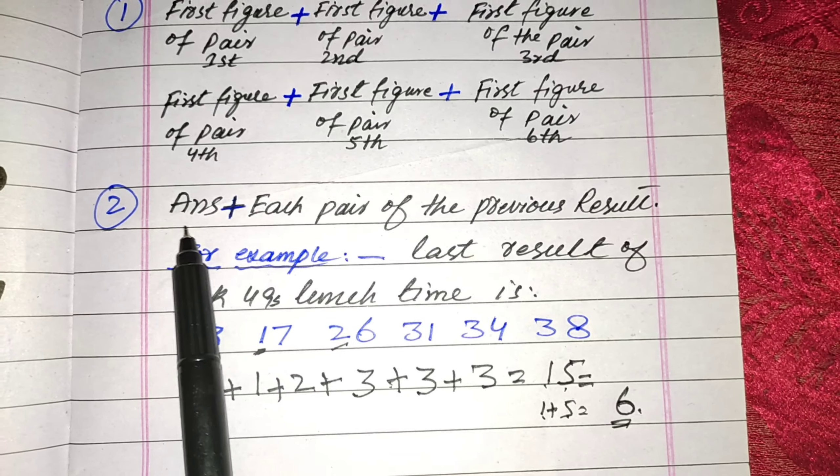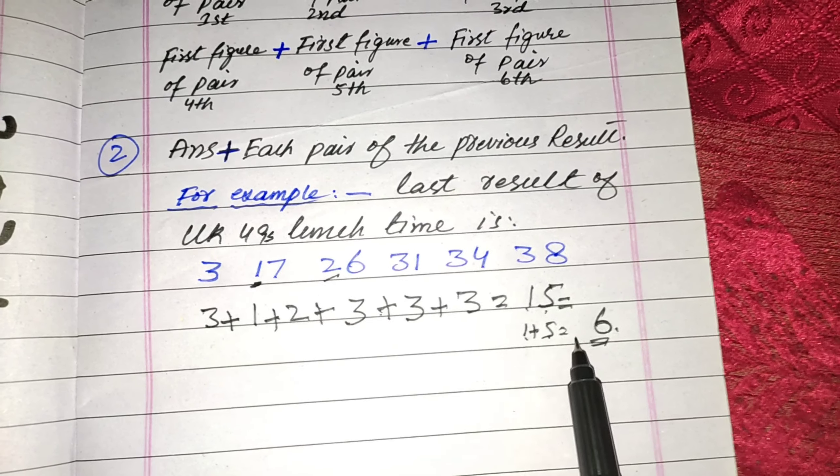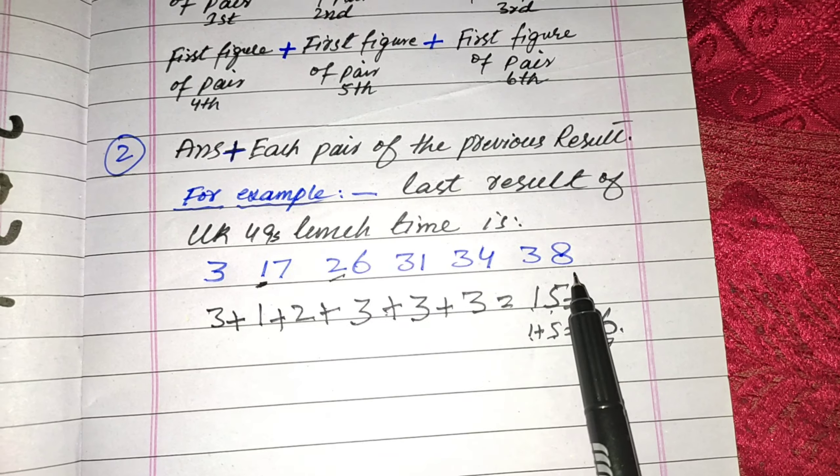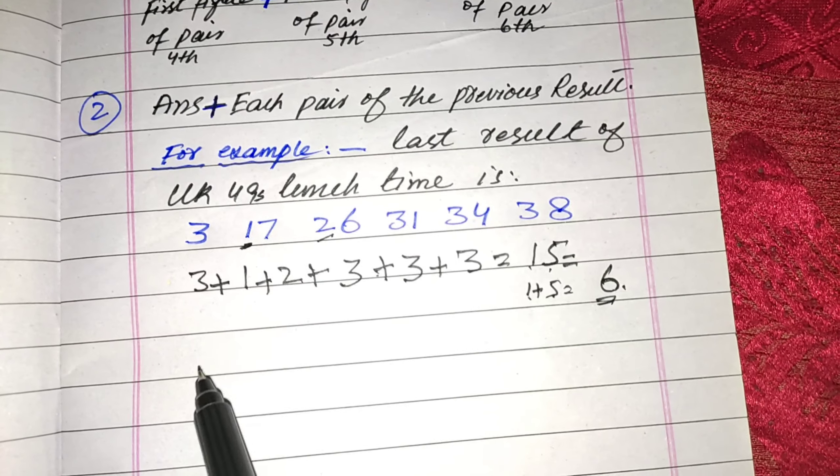Okay, it is the answer here. Here I write. Now this 6, add this 6 with each pair of the result. Now we add 6 plus 3: 6 plus 3 is 9.